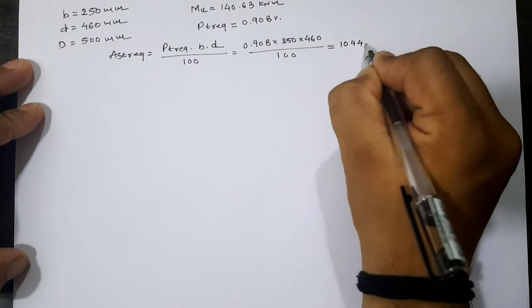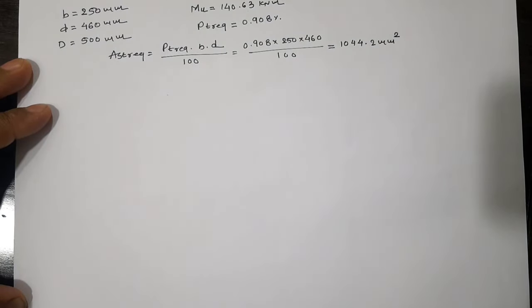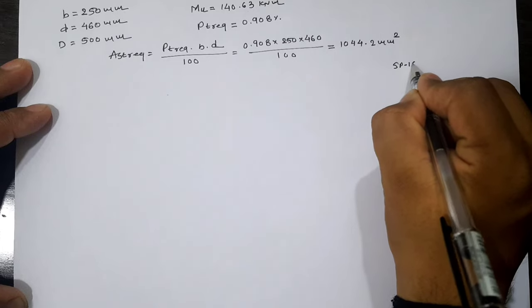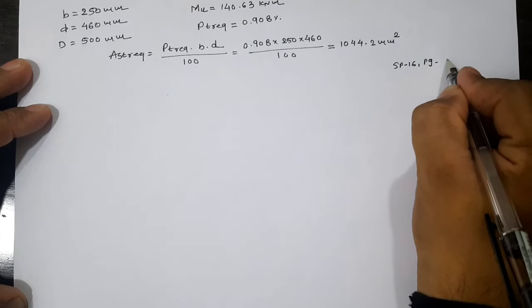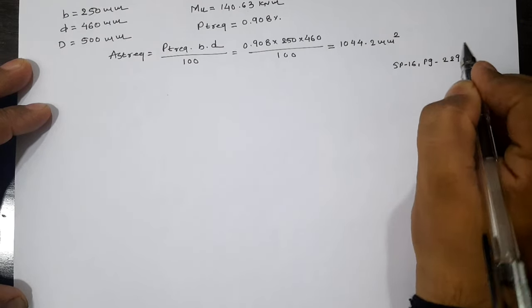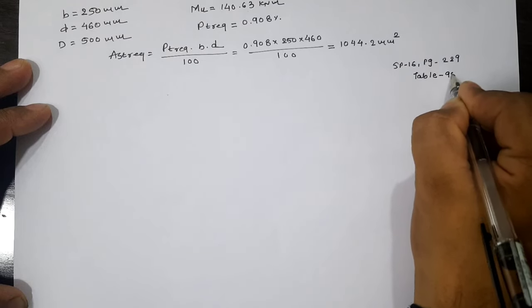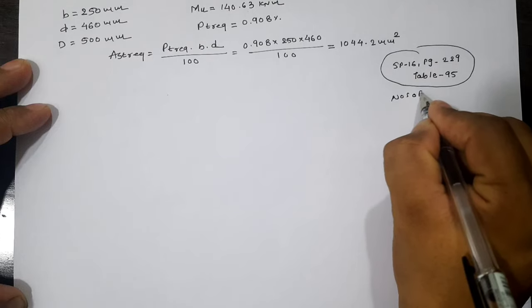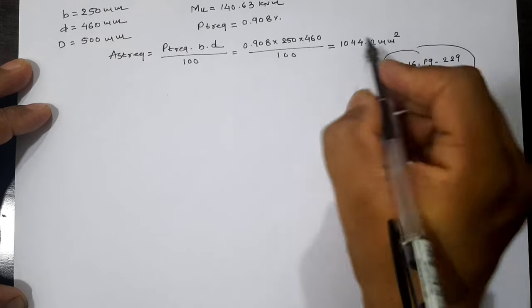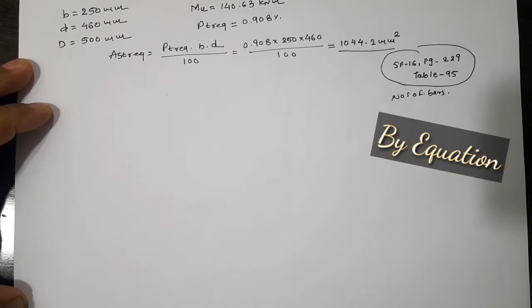Now using SP16, let me check in the column. For 250, page number 229, Table number 95, we will have the number of bars for 1044.2 mm², which is four numbers of 20 mm diameter bar.